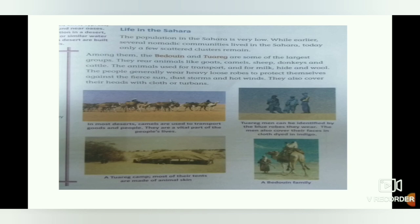The population in the Sahara is very low. While earlier several nomadic communities lived in the Sahara, today only a few scattered clusters remain. Among them, the Bedouin and Tuareg are some of the largest groups. Bedouin means desert dweller. They rear animals like goats, camels, sheep, donkeys and cattle. The animals are used for transport and for milk, hide and wool. The people generally wear heavy loose robes to protect themselves against the fierce sun, dust storms and hot winds. They also cover their heads with cloth or turbans.